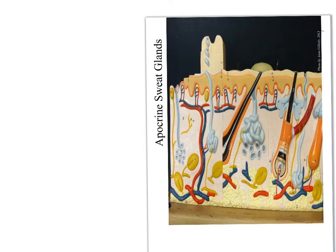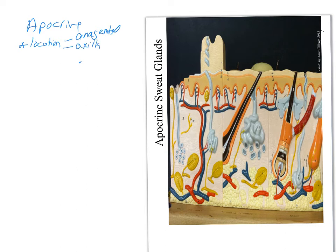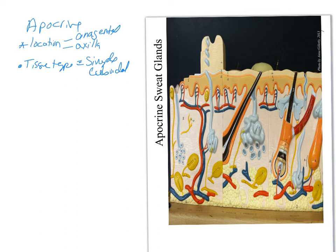Now let's look at apocrine glands. Location is very specific — it'll either be anogenital (between your legs) or axillary (the armpit). That's really the only place you'll find them on humans. The tissue type is simple cuboidal. So if you're looking at a bald scalp slide and you see a pseudoriferous gland, you know it's not apocrine — it has to be eccrine. If you're looking at a slide from the axilla, it's really easy to mix them up.